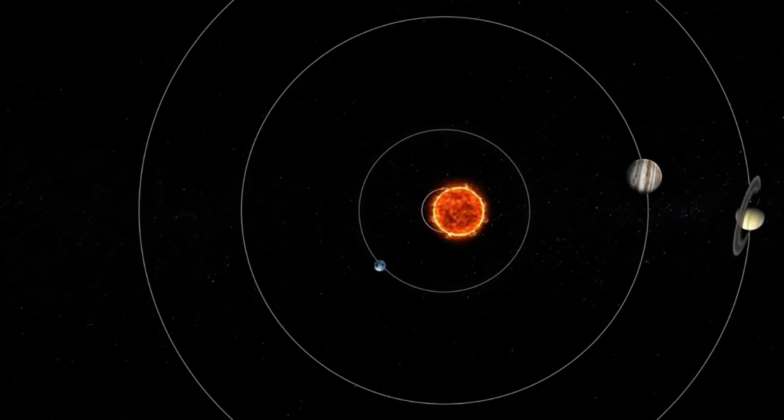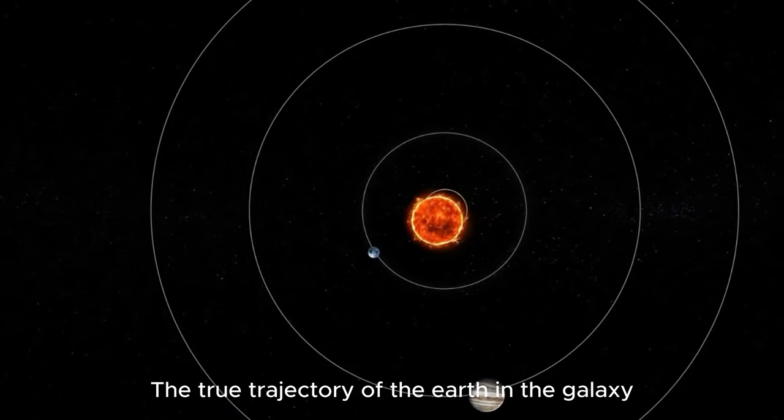If you just calculate the trajectory of the Earth in the galaxy, it's easier. Just calculate how the Earth moves around the Sun, how the Sun moves around the galactic center, and then stack the two reference frames together. You can get the true trajectory of the Earth in the galaxy.